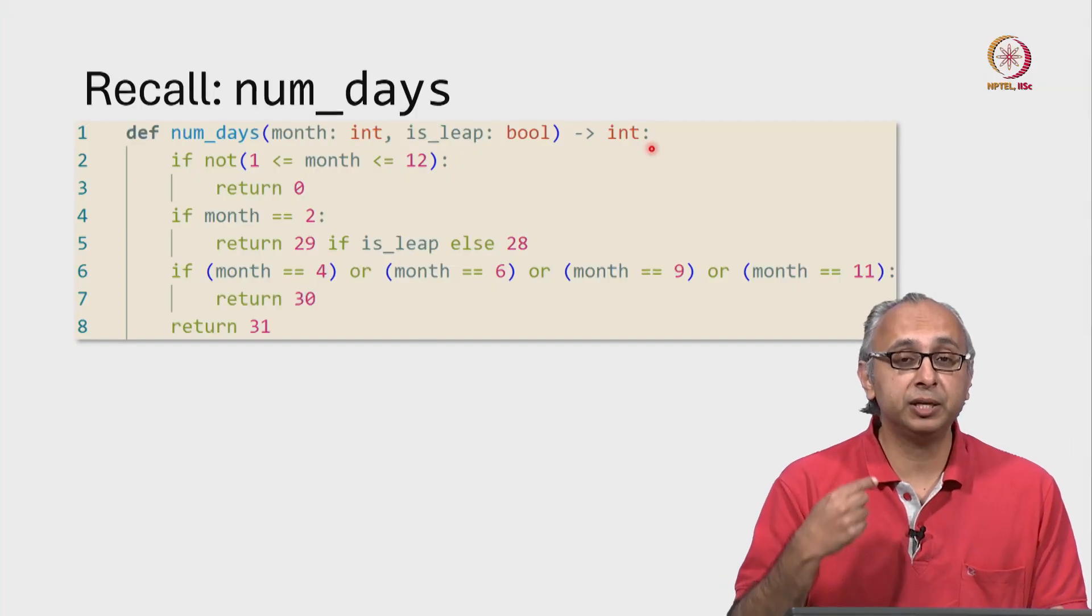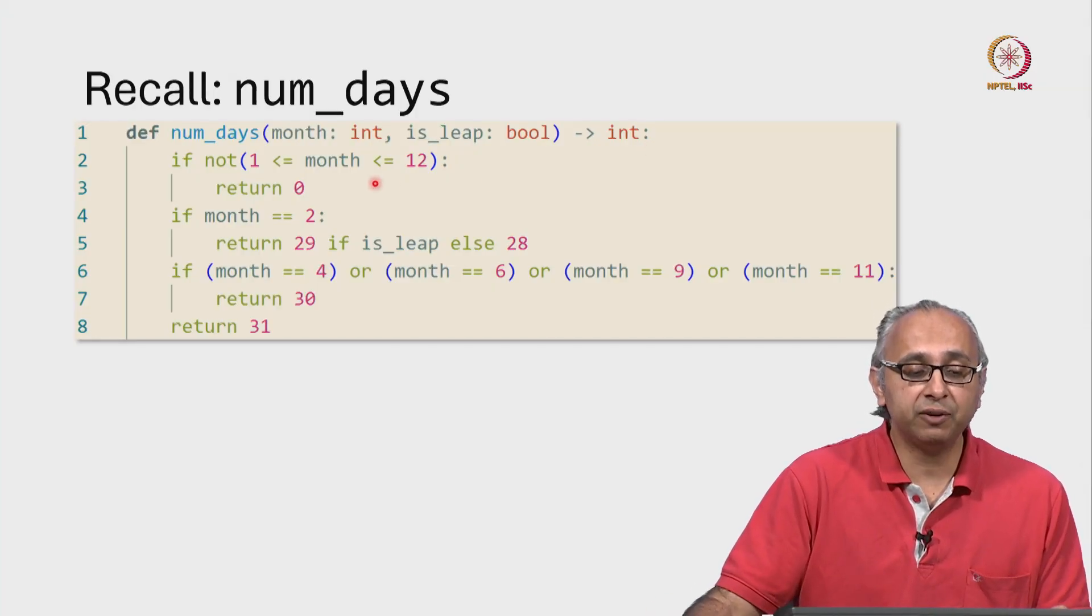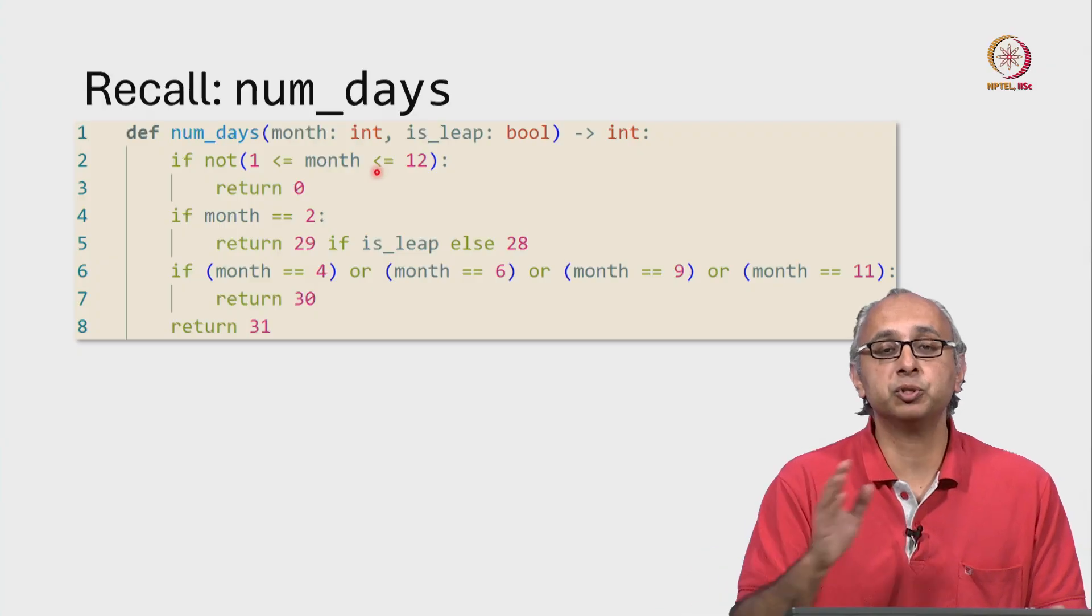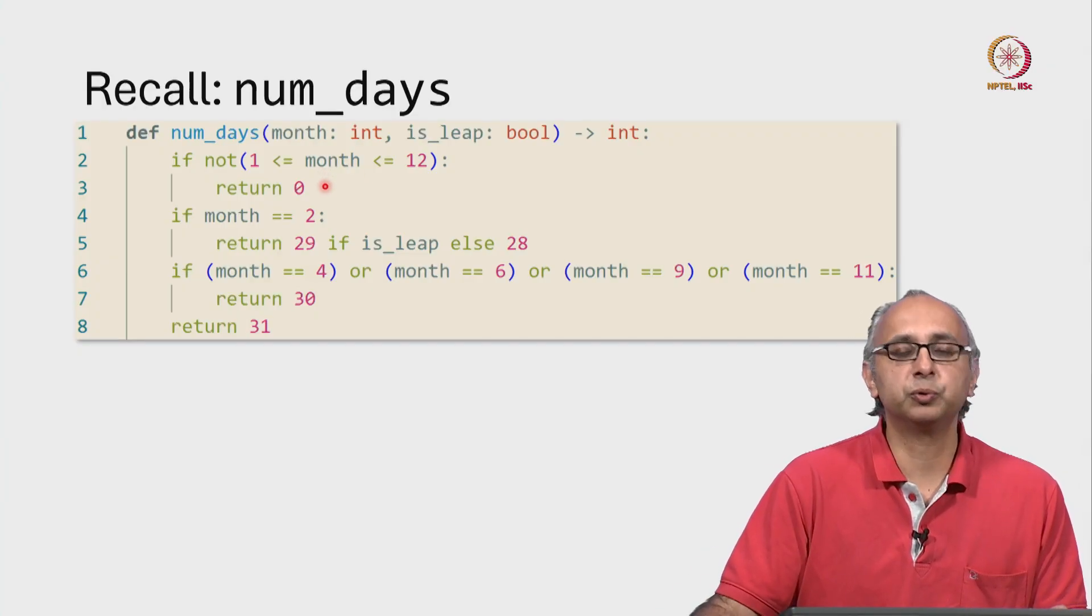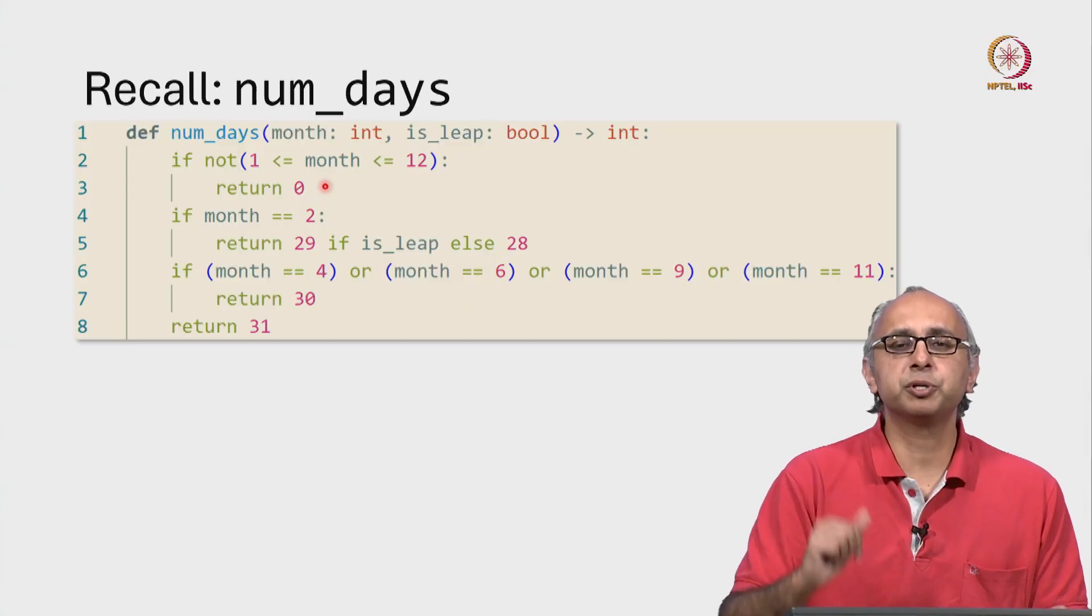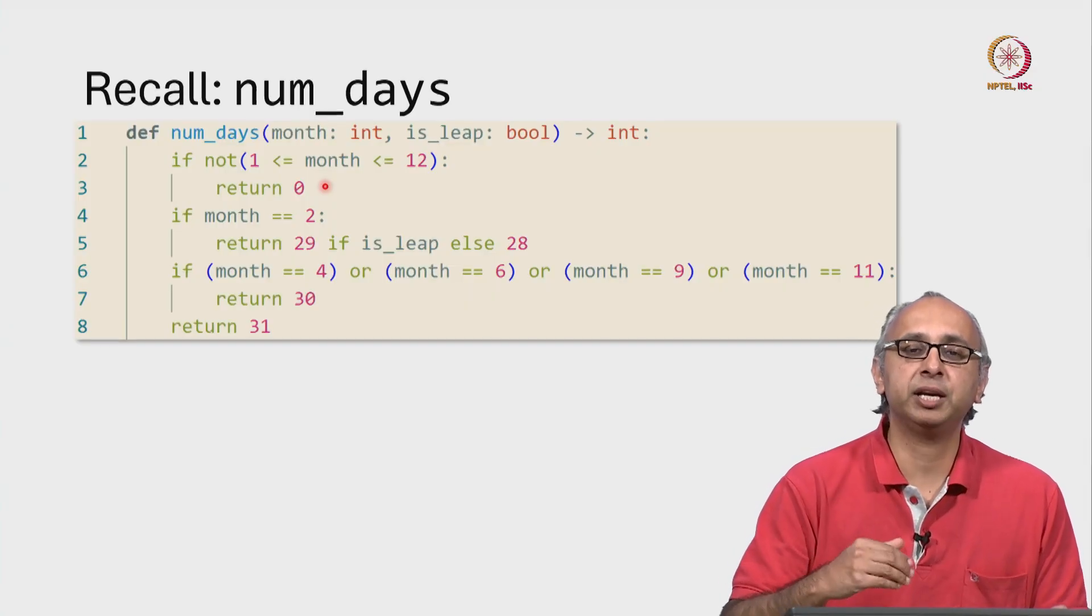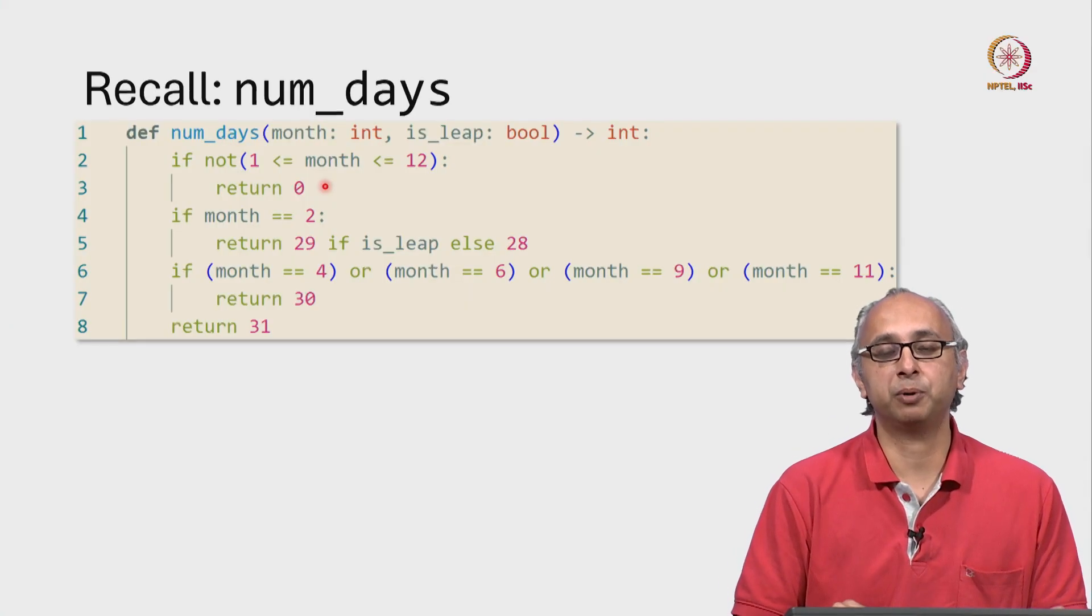Another thing we agreed during that conversation was if they gave us a month that was not in the range 1 to 12, then we promised to return 0. So this was the debugged function that actually lived up to that promise.